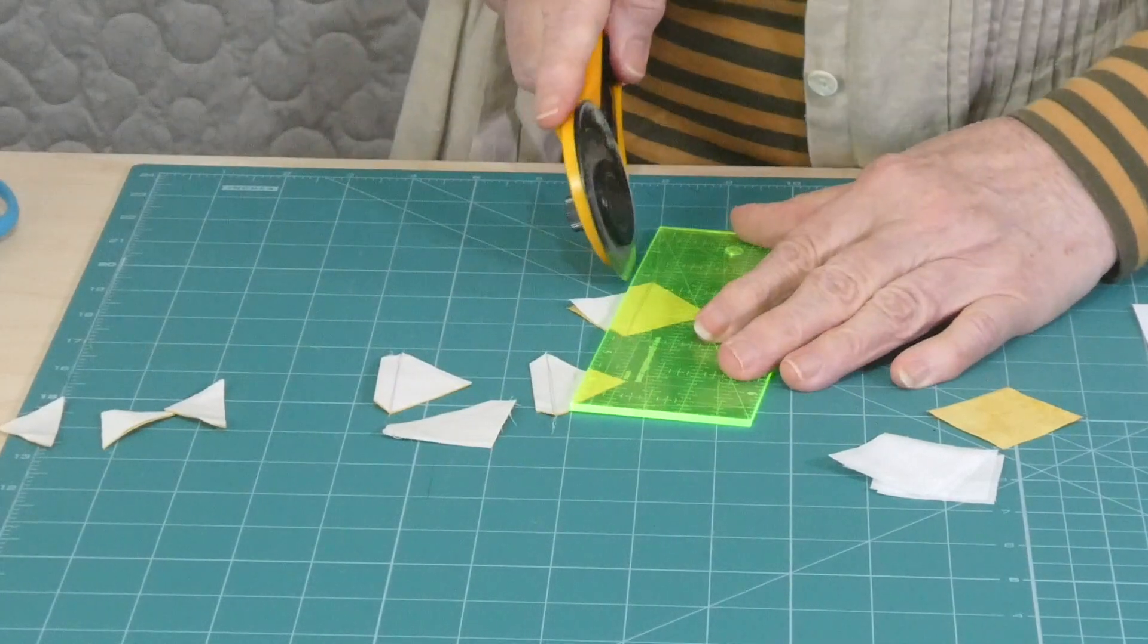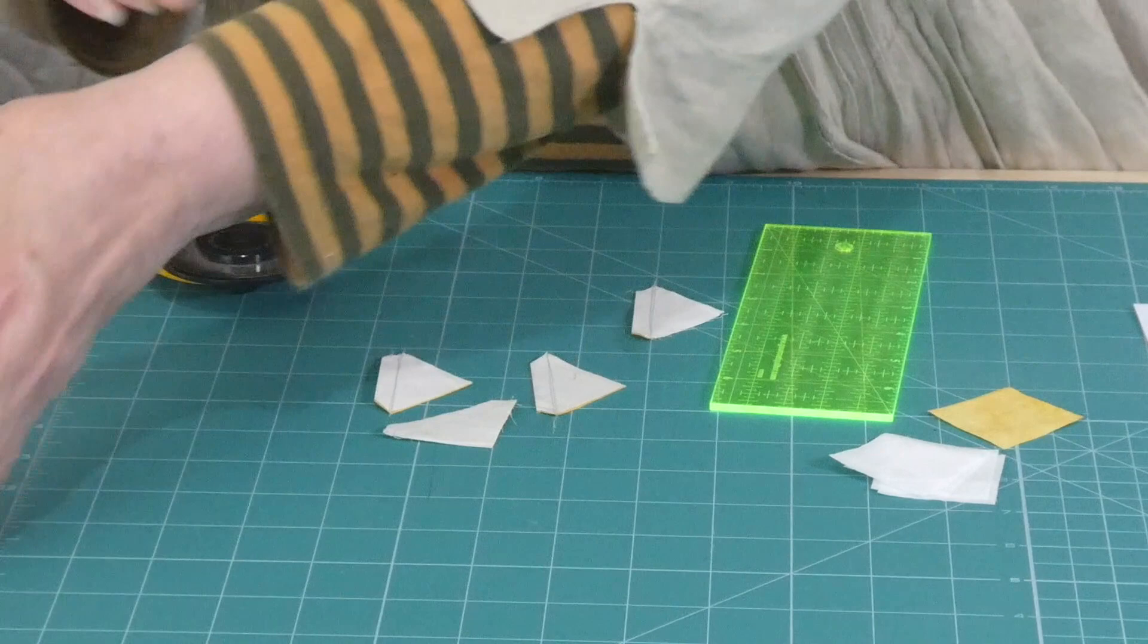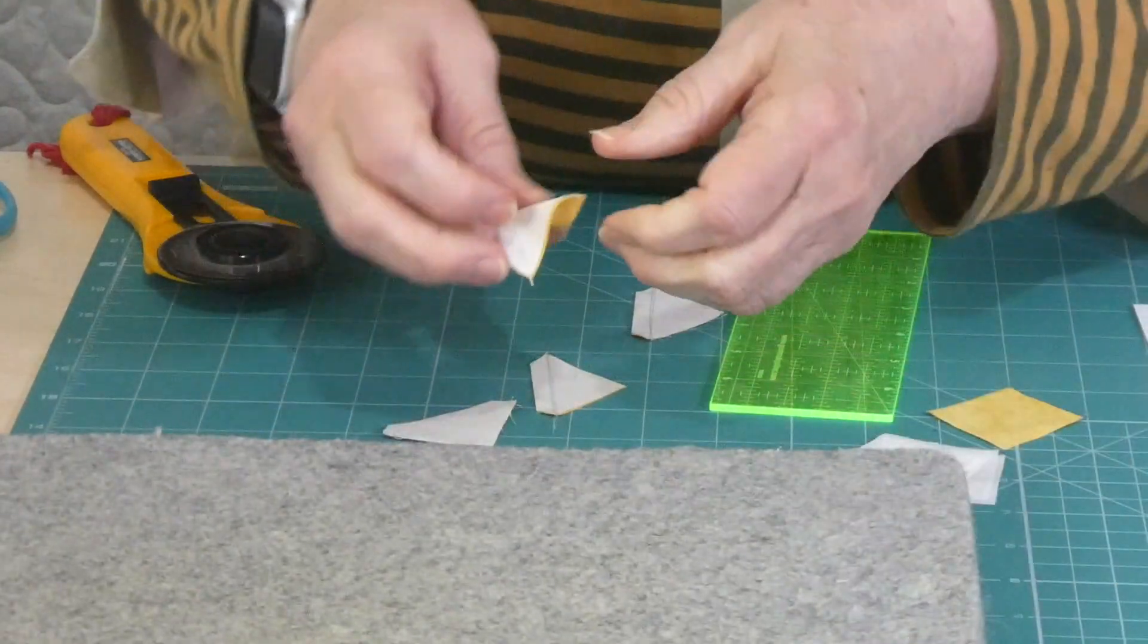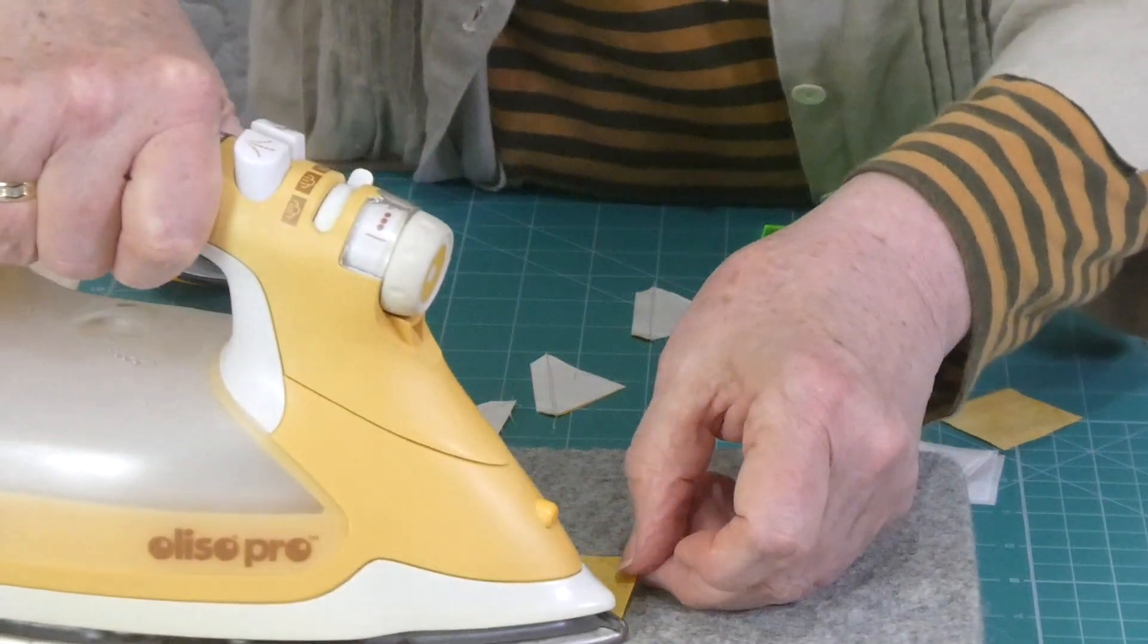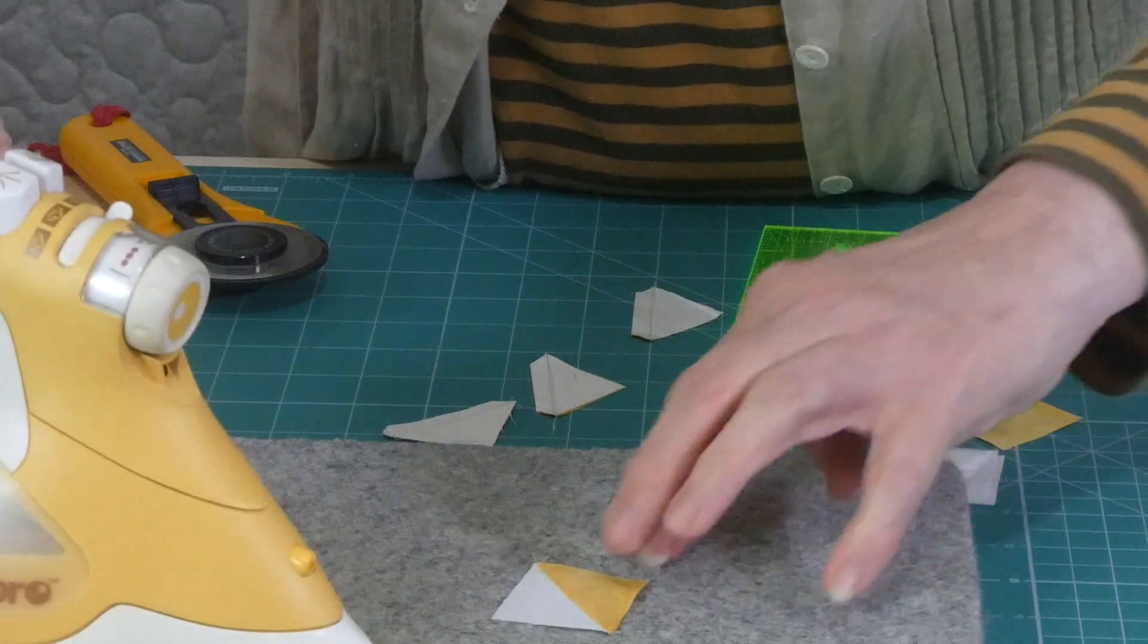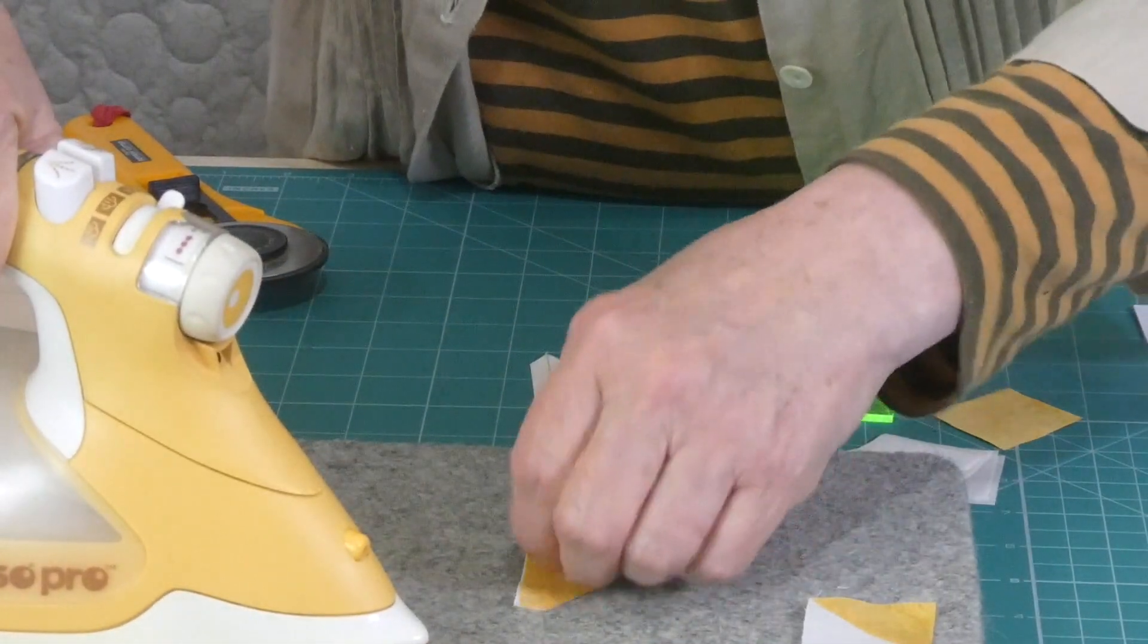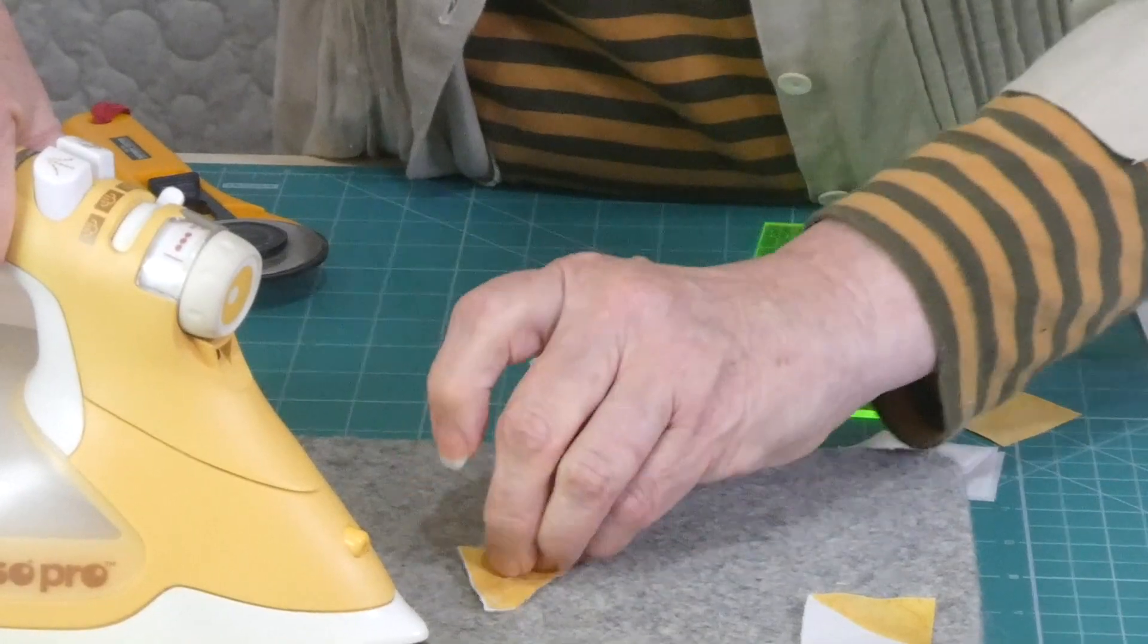Then we need to press them and I'm going to press them so that the seam goes in towards the color rather than the white. Just be careful you don't press them out of shape because it's on a diagonal. It would be very easy to press things out of shape. It can happen even when you're not trying.